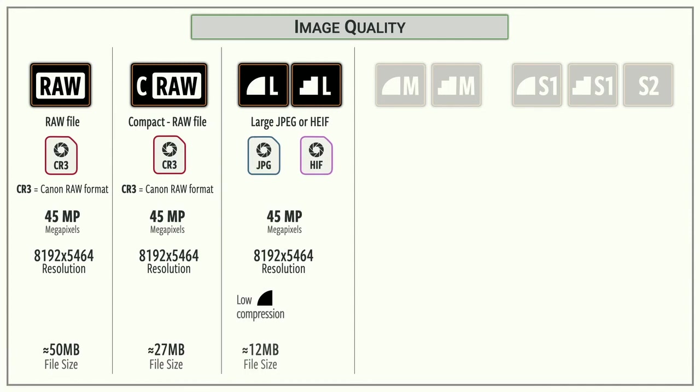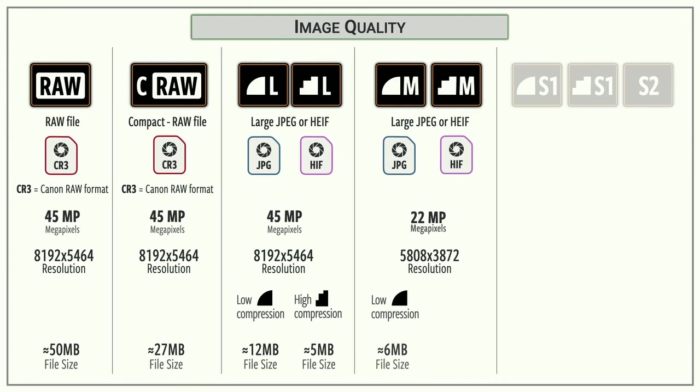All right next up we have a bunch of jpeg options so we have different file sizes for the jpegs based on compression so we have a kind of a full compression and a low compression option here which is going to result in different file sizes according to what your needs are we have large medium and small which has to do with the resolution